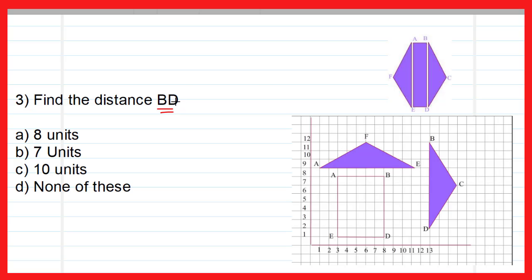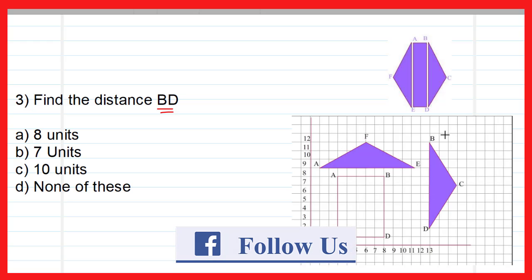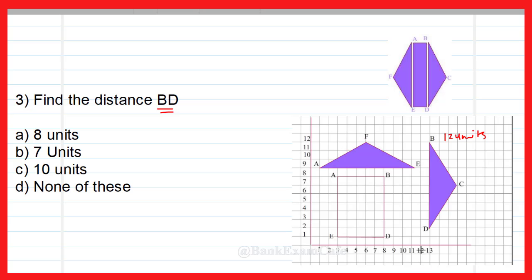The third question asks us to find the distance BD. This is similar to the previous approach. Point B is at a distance of 12 units from the x-axis, and point D is at a distance of 2 units from the x-axis. Therefore the distance BD is 12 minus 2, which equals 10 units. Option C is correct.